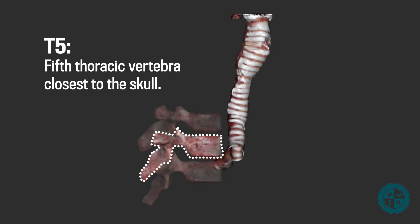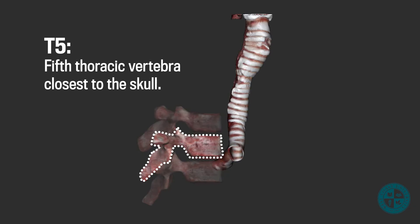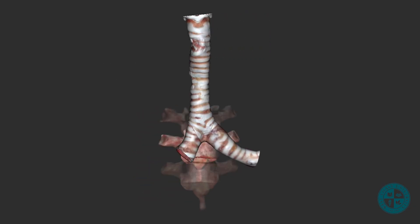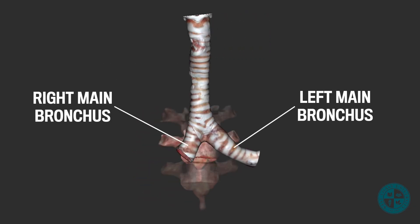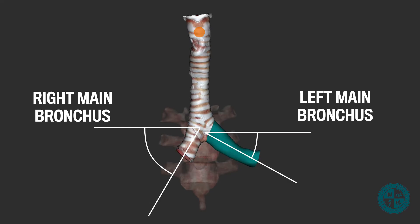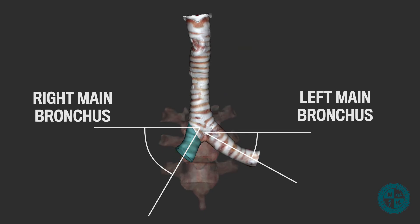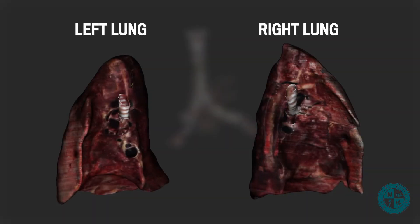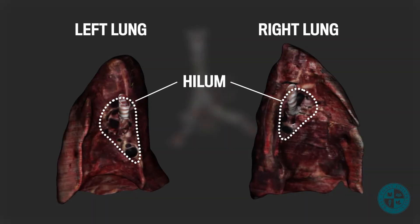Around vertebral level T5, the trachea branches into the right and left main bronchi, which is where the airway will enter the lungs. The right main bronchus enters the right lung at a steeper angle than the left, so when food or other foreign objects enter the windpipe, it is more likely to get lodged in the right main bronchus than the left. The main bronchi enter the lungs at the lung hilum.